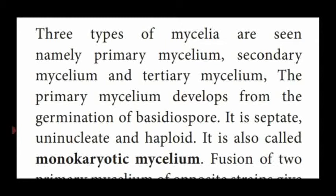In Agaricus fungi there are three types of mycelium: primary mycelium, secondary mycelium, and tertiary mycelium. The primary mycelium is produced from the germination of basidiospores. Agaricus fungi contains basidiospores because it belongs to the class Basidiomycetes fungi, and that is why the spores are named basidiospores.